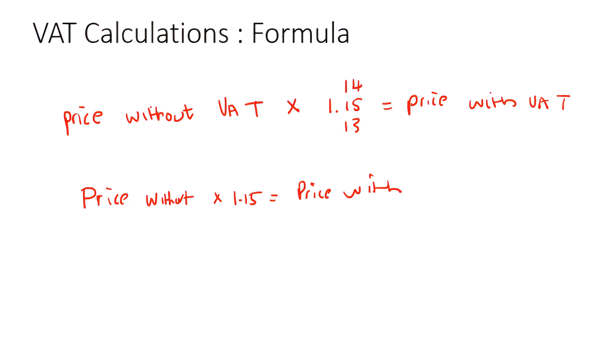Now something else I want to say that's just going to make your life a whole lot easier is you can actually just do this. To add VAT, multiply by 1.15. To take VAT away, divide by 1.15.